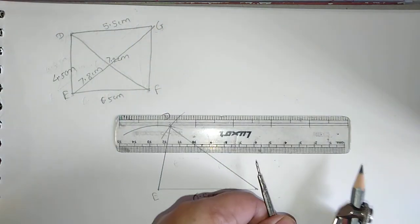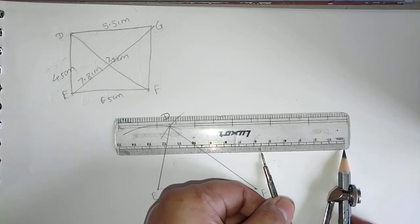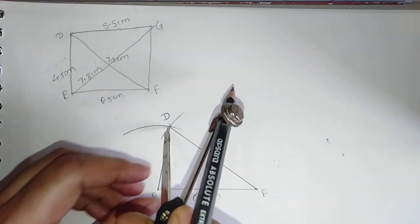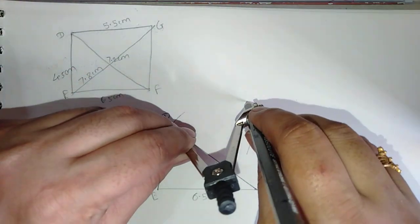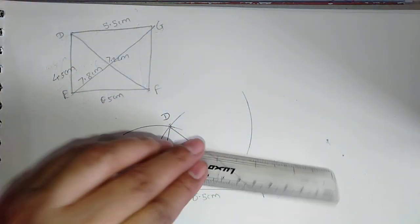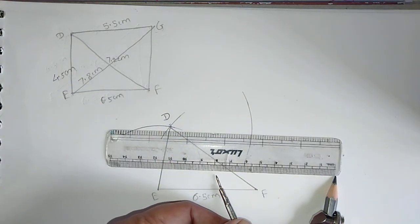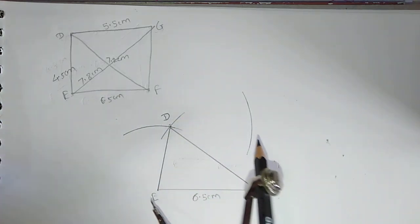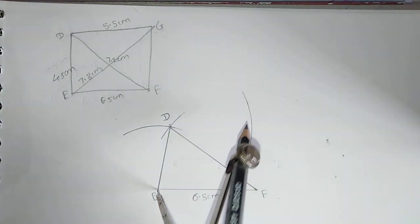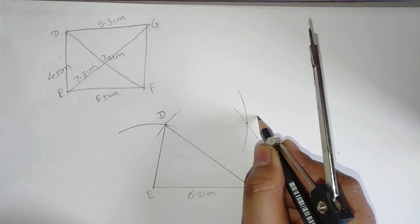Take the 5.5 cm distance and draw the arc from point D. Now take the 7.8 cm distance and draw the arc from point E. Now we got the intersection point — this is point G.